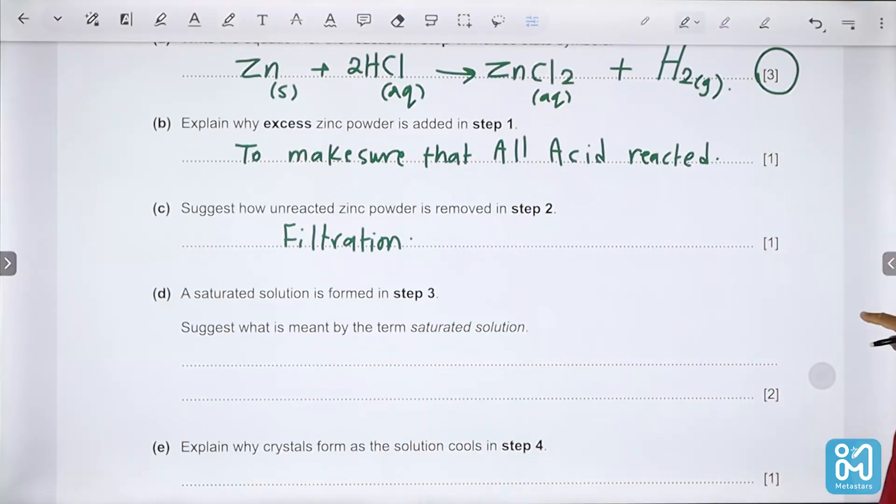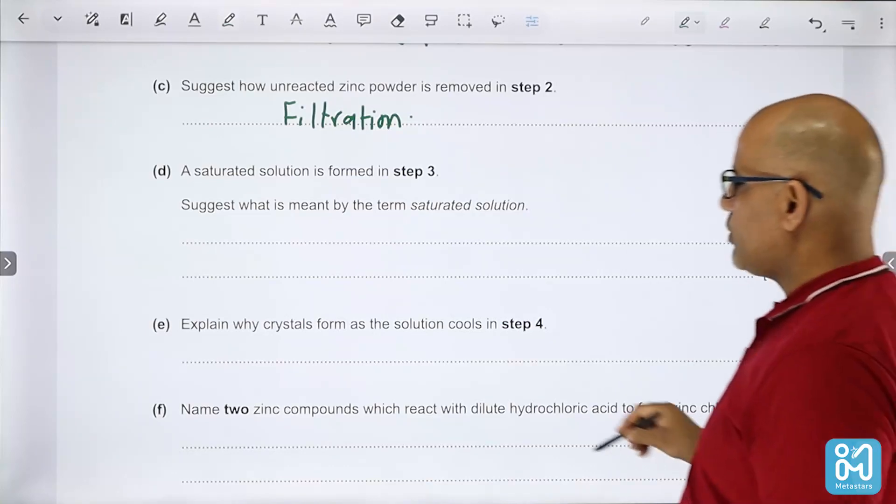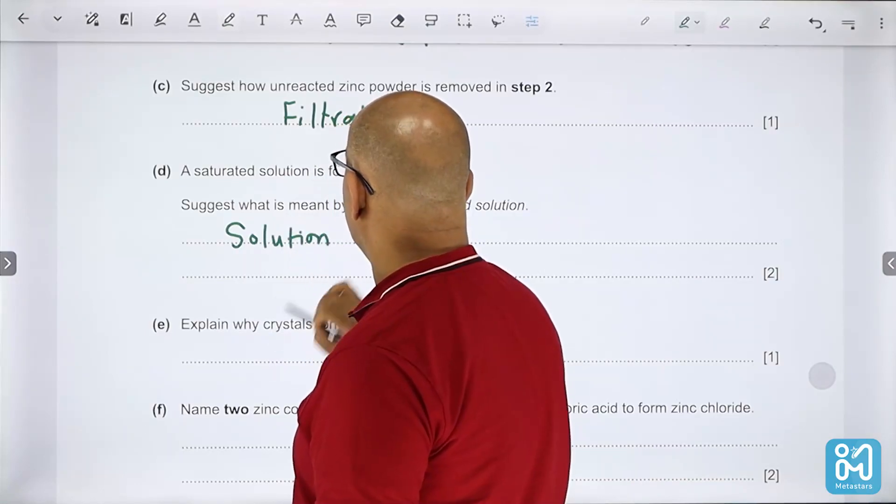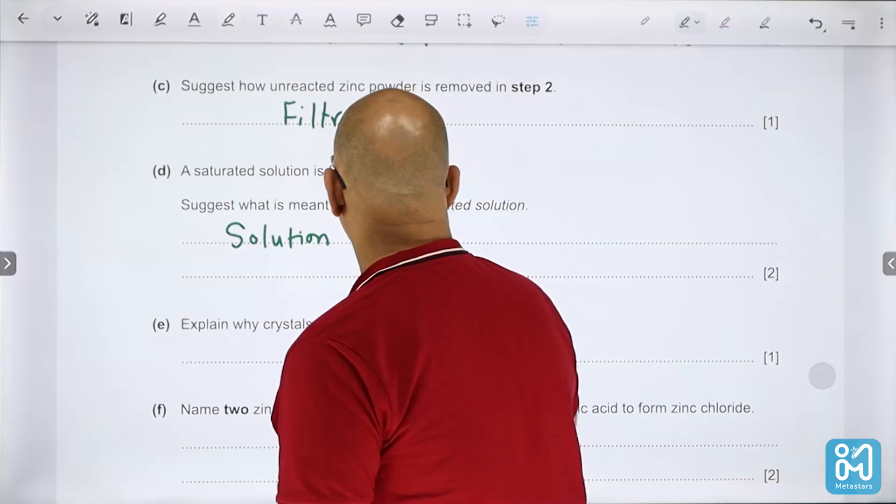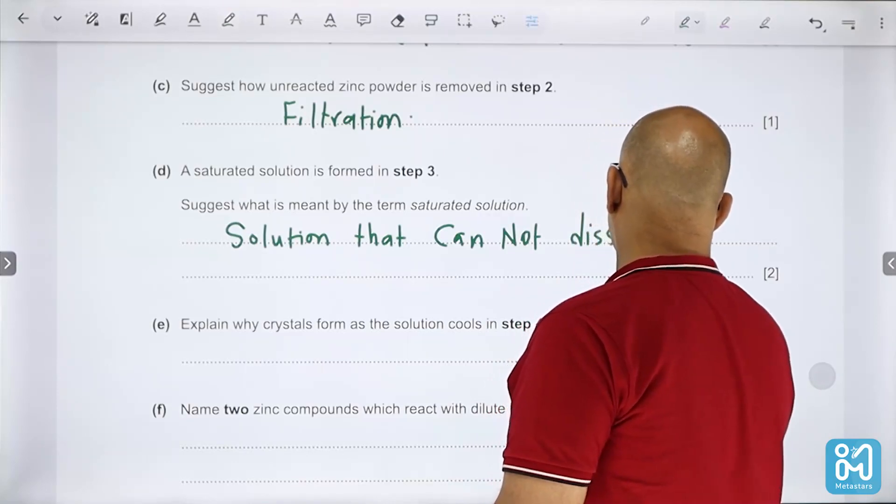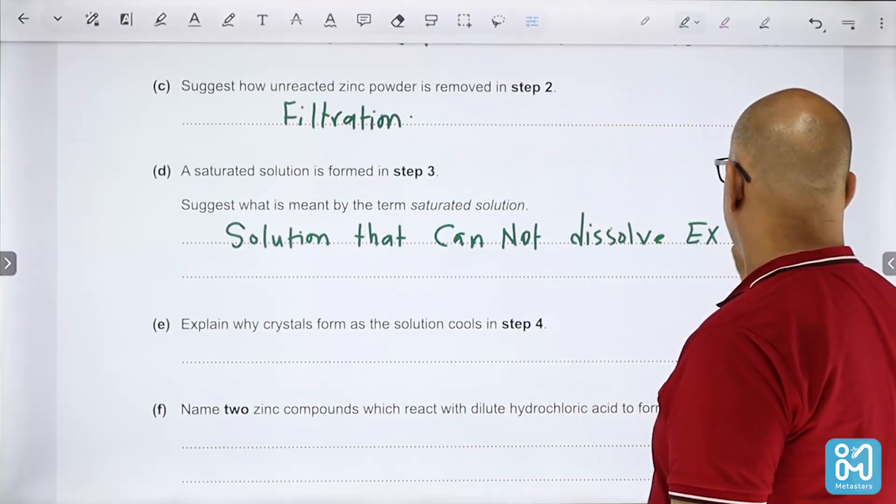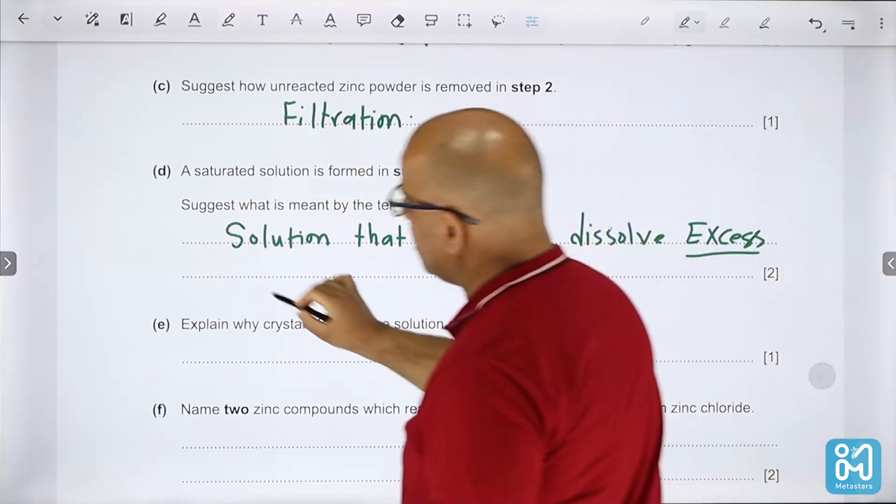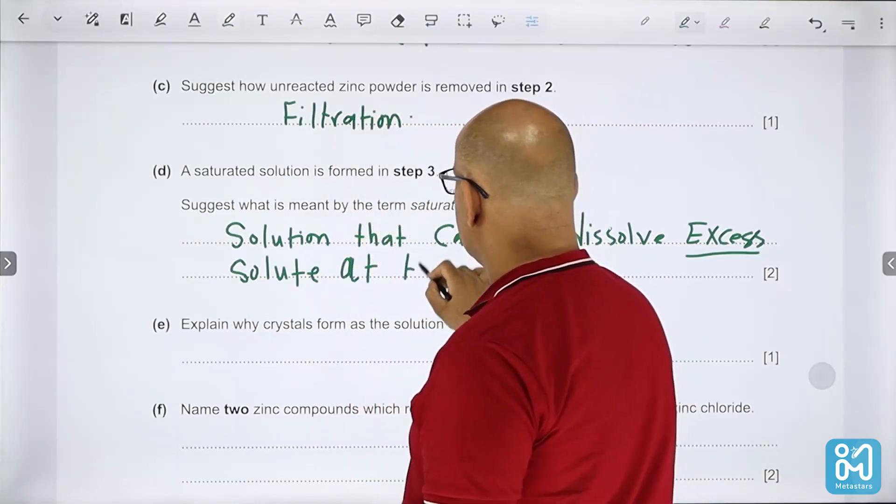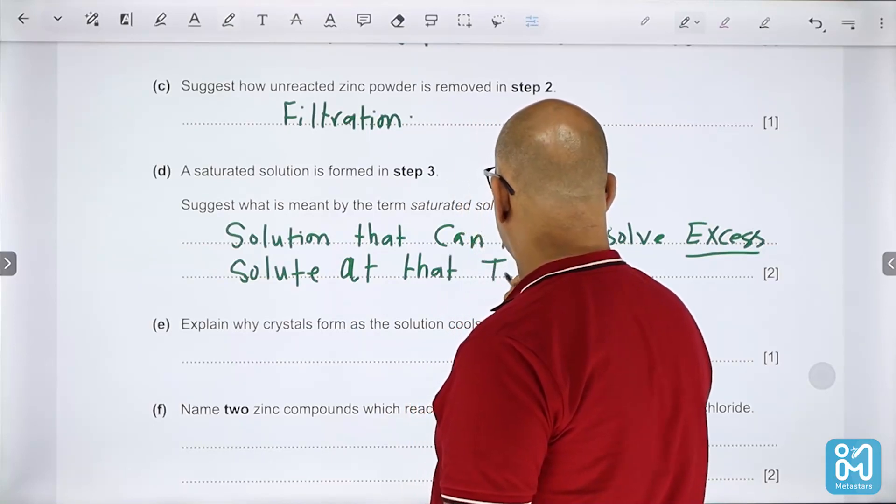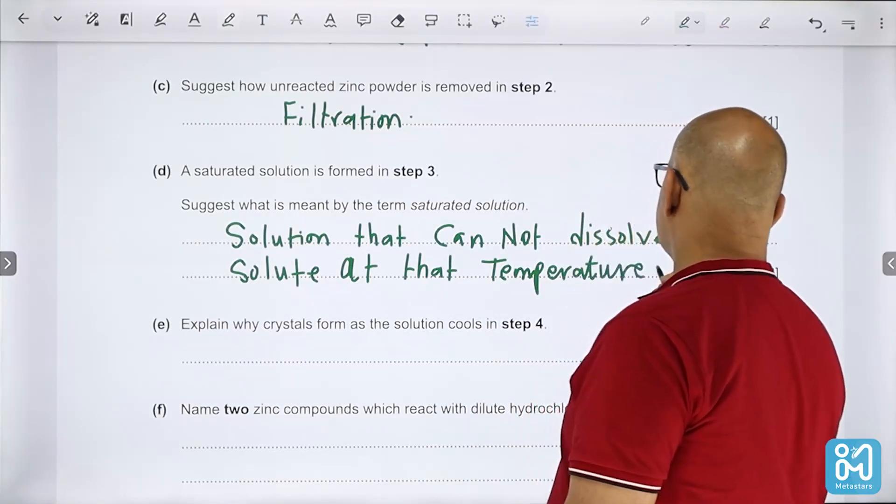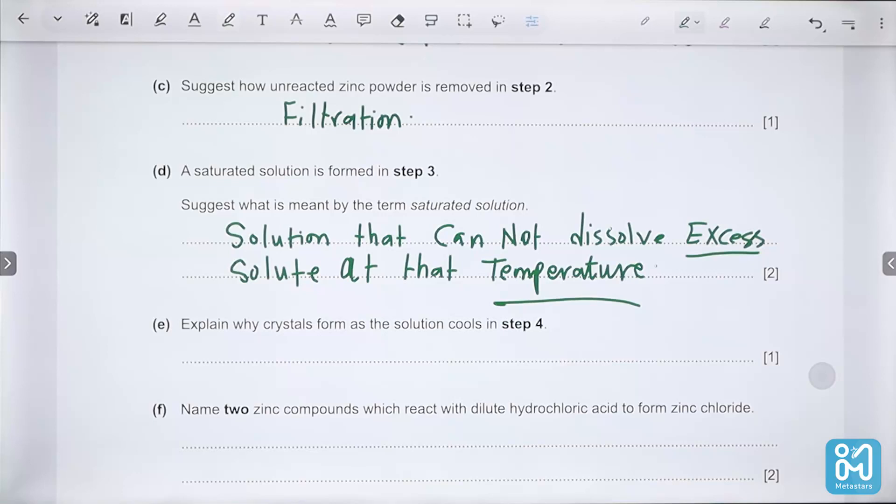A saturated solution is formed in step three. Suggest what is meant by the term saturated solution. It's the solution that can't dissolve excess or extra solute at that temperature or at the specific temperature. The solubility is dependent on the temperature.